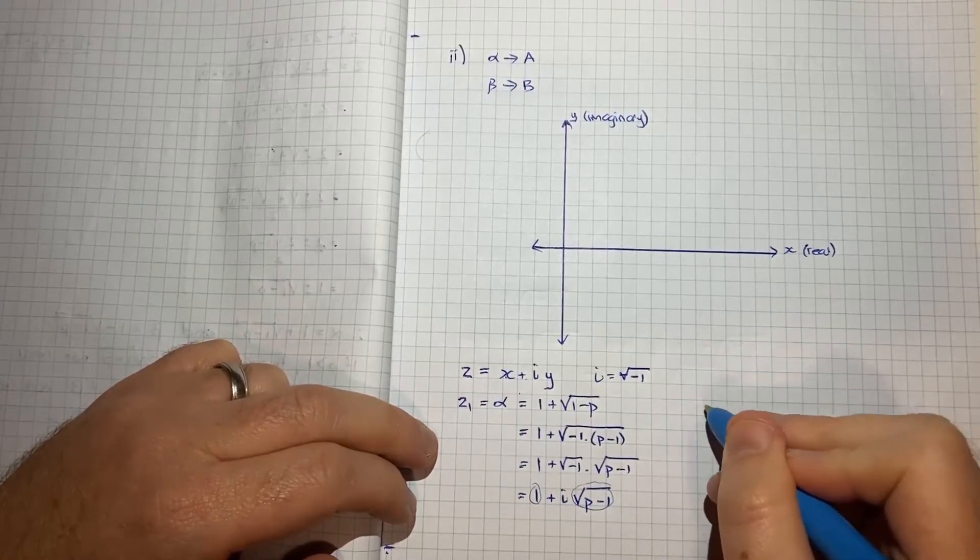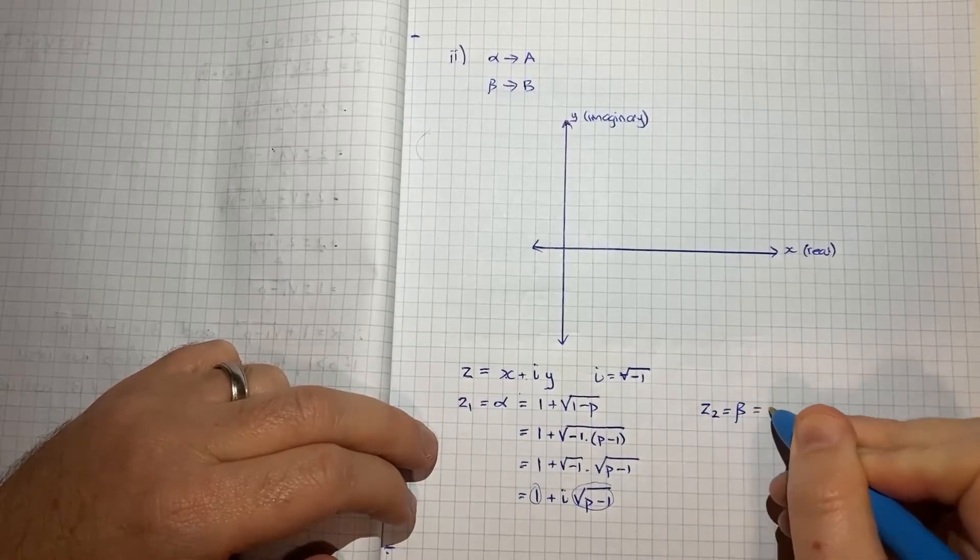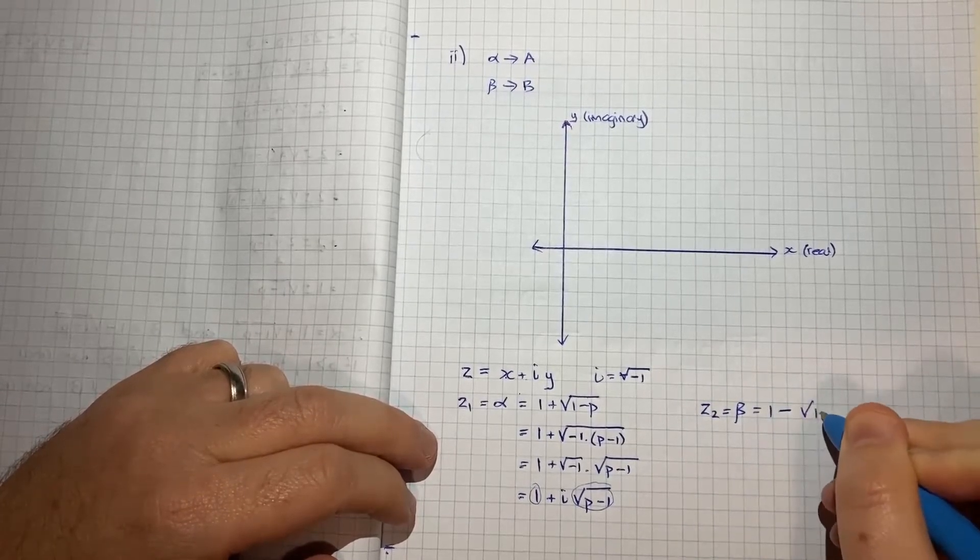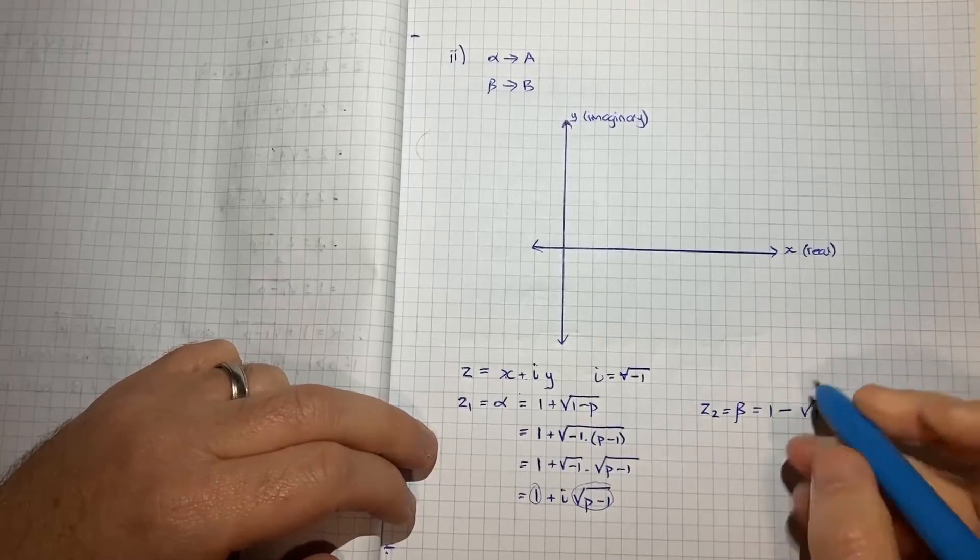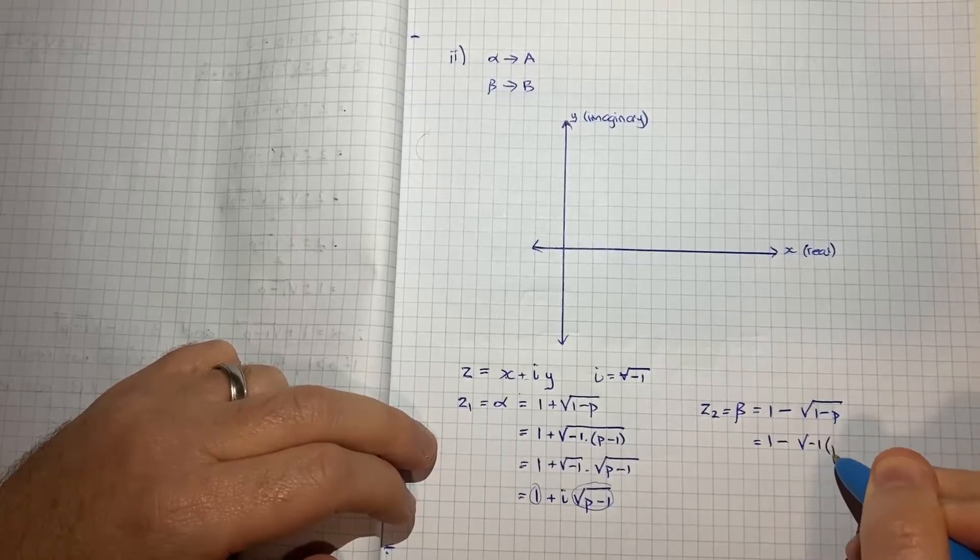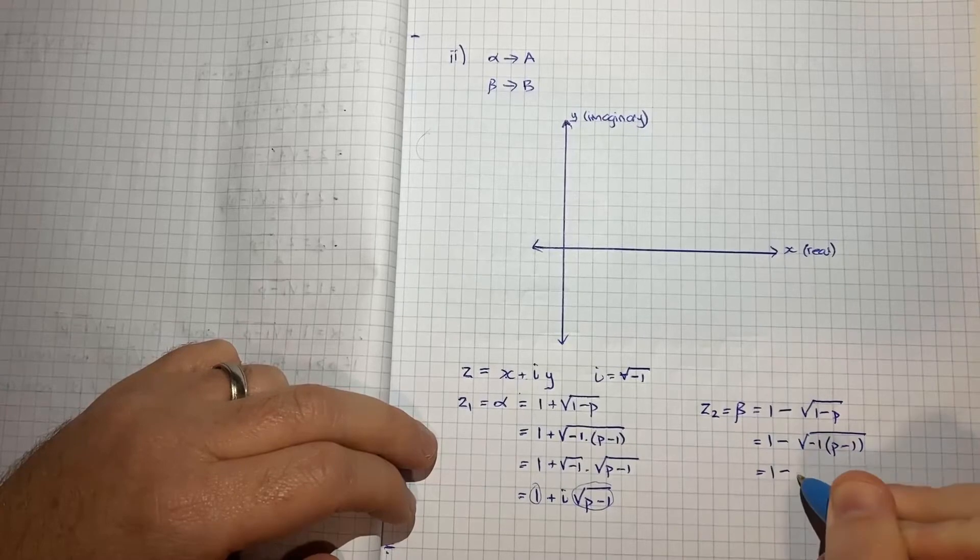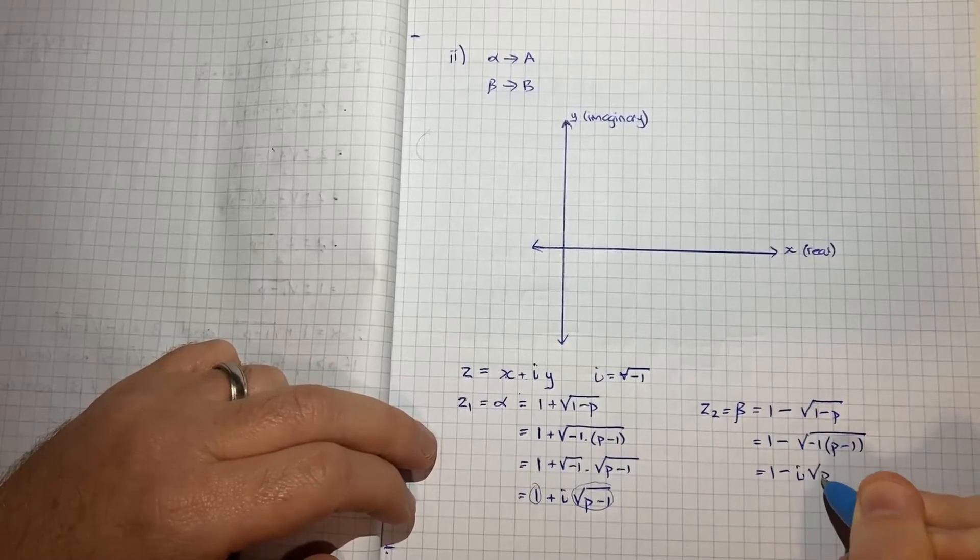Now we'll do the same for beta, so we'll say Z2 is equal to beta is equal to 1 minus the square root of 1 minus P, and we'll do a fairly similar set of steps, 1 minus the square root of negative 1, P minus 1, which equals 1 minus I root P minus 1.